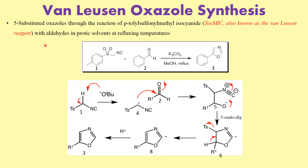This is probably one of the best methods using which five-substituted oxazoles can be synthesized. When you treat para-tolyl sulfonyl methyl isocyanide — this reagent is called the Van Leusen reagent, tagged as compound number one — the reaction produces a five-substituted oxazole. Remember that numbering in heterocyclic compounds starts from position one through five.